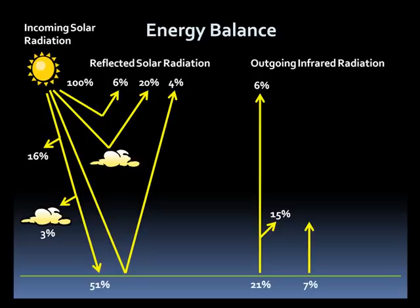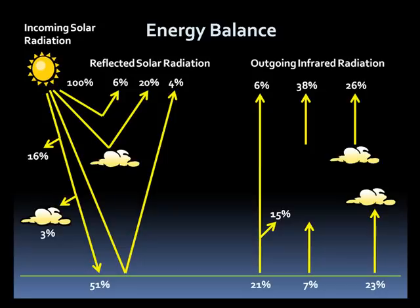7% is returned to the atmosphere by sensible heat flux, which is the heat energy released by changes in temperature. Next, 38% is emitted back to space by the atmosphere itself. 23% is put back into the atmosphere by latent heat flux, which refers to the evaporation of water, which many times turns into clouds. Lastly, 26% is emitted back to space by clouds.